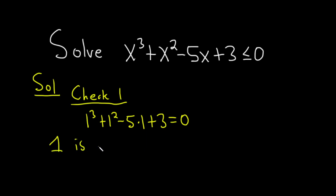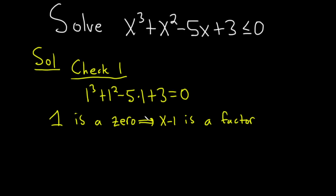1 is a zero. And so therefore, we know that x - 1 is a factor. And so if we divide by x - 1, the remainder will be 0. So let's do that. In the next step, we're going to divide by x - 1. And to do that, we basically flip the sign, put a little bracket here, and we move to synthetic division.